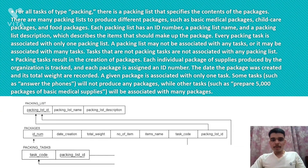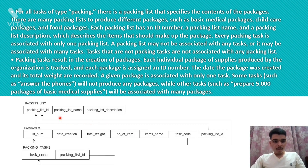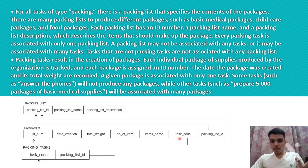For all tasks of type packing, there are packing lists. The packing list must contain an ID number, name, and description which describes the item that the package holds. The packing list results in the creation of packages, which store ID number, date of creation, total weight, number of items, item name, and task code.